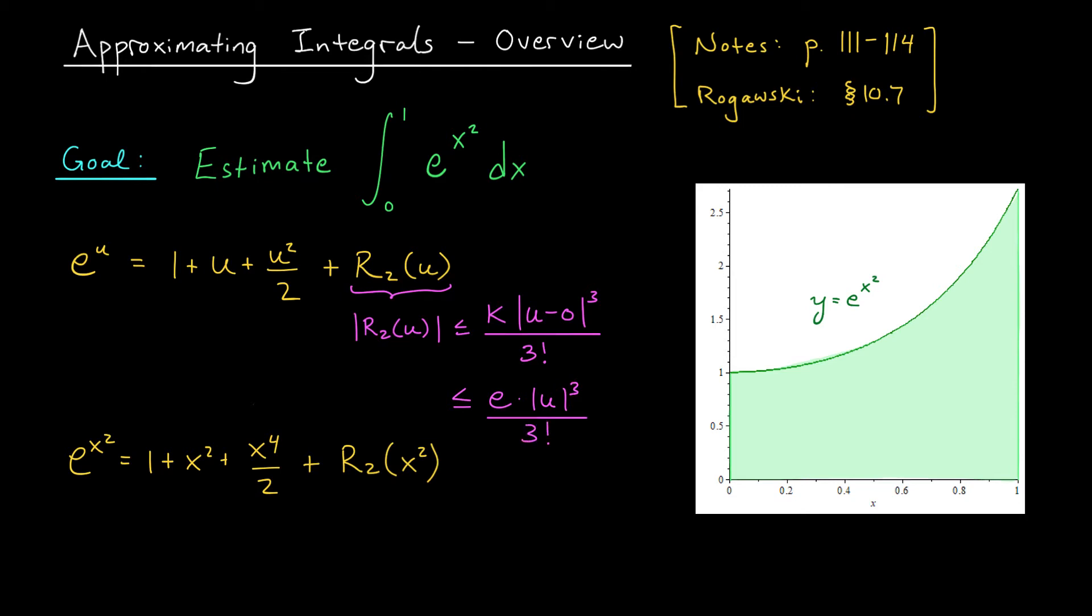As a result, my remainder is always less than or equal to e times the absolute value of u cubed divided by 3 factorial. Now, e is kind of a gross number to work with, so I'm going to go ahead and round it up to 3. You can always round up when making these error estimates. This is going to be less than or equal to, okay, 3 over 3 factorial. That's going to be 1 over 2. So absolute value of u cubed over 2. Okay, cool. We have an upper bound for this remainder.